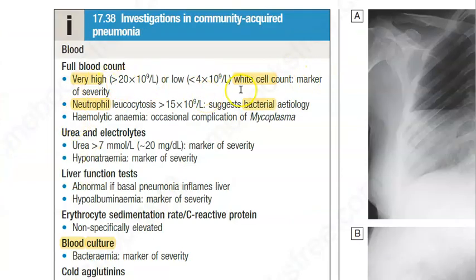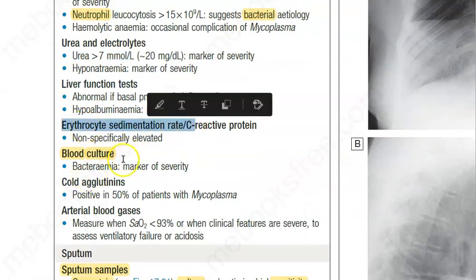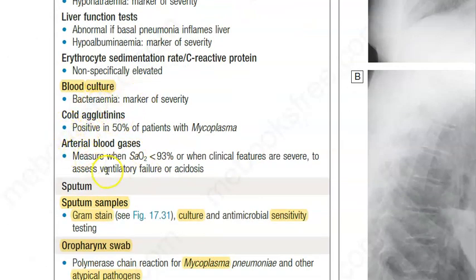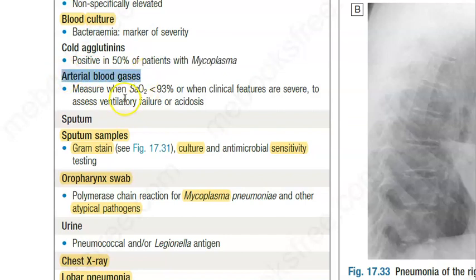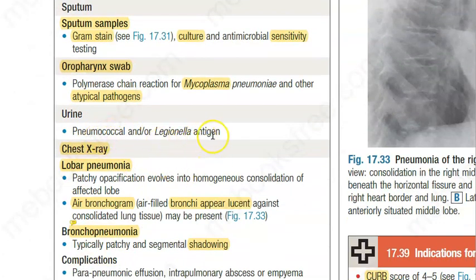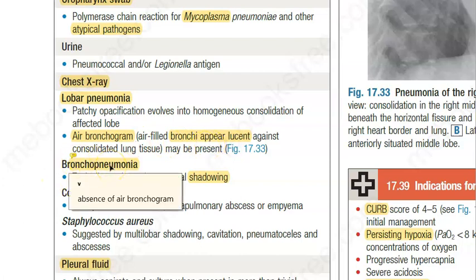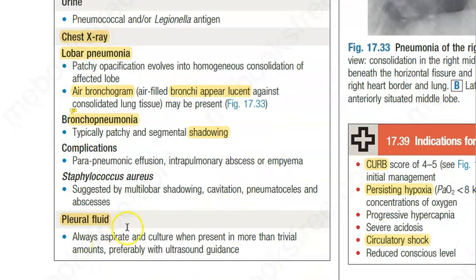For investigations, take a full blood count checking white cells and neutrophils, urea and electrolytes for kidney function, liver function tests, ESR, blood culture to check for bacteremia, arterial blood gas to check carbon dioxide and oxygen levels, sputum to check for tuberculosis, urine to check for pneumococcal antigen, chest X-ray to identify lobar pneumonia with air bronchogram or bronchopneumonia with absence of air bronchogram, and pleural fluid if there is suspected fluid.